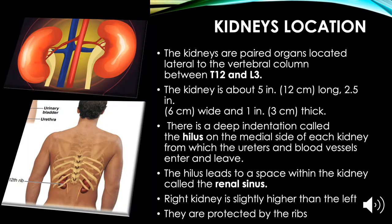Kidney location: The kidneys are paired organs located lateral to the vertebral column between T12 and L3. Each kidney is about five inches (12 cm) long, 2.5 inches (6 cm) wide, and one inch (3 cm) thick. There is a deep indentation called the hilum on the medial side of each kidney, from which the ureter and blood vessels enter and leave. The hilum leads to a space called the renal sinus. The right kidney is slightly higher than the left, and they are protected by the ribs.